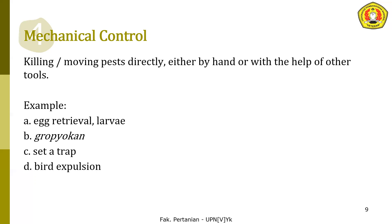Examples of mechanical control include using traps, and also gropyokan. Gropyokan is an activity of disturbing rat nests, carried out simultaneously by many people across one area at the same time. This causes the rats to come out of their nests and be caught or killed.